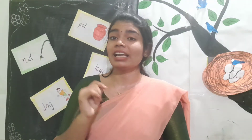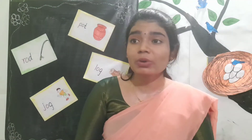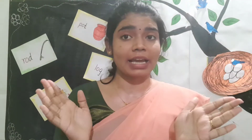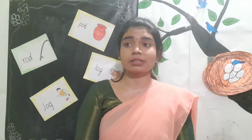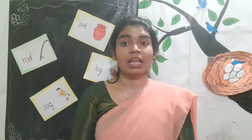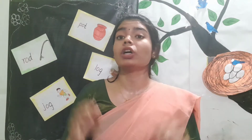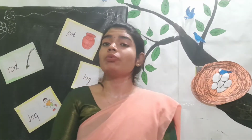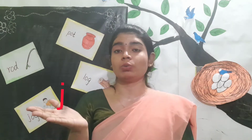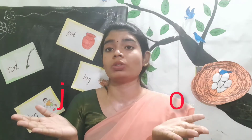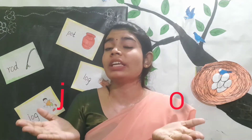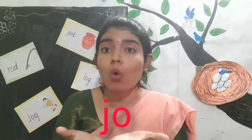Children, in today's class I am going to blend some common letters with the sound O. Letter O makes the sound O. See children, when we blend J sound with O sound, we get the sound JO.